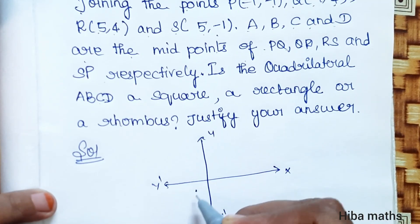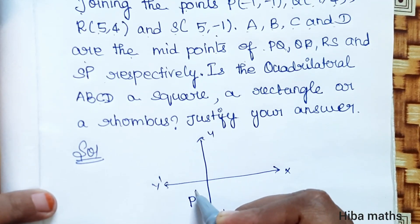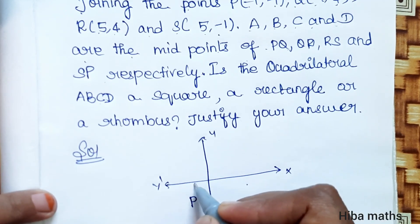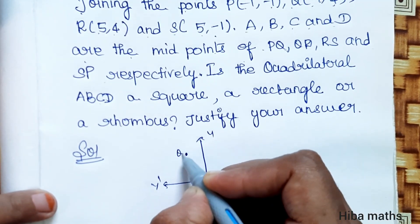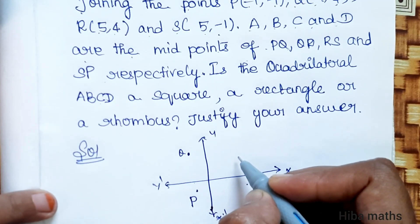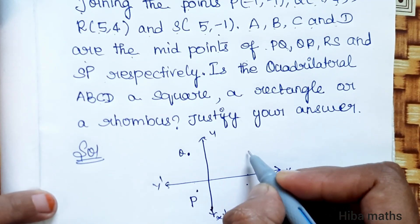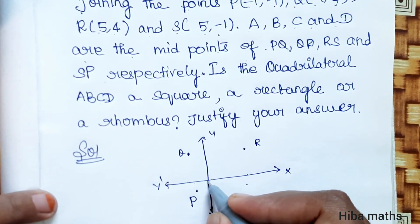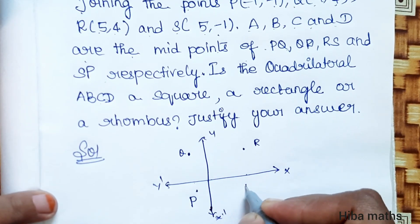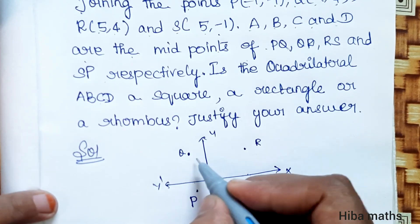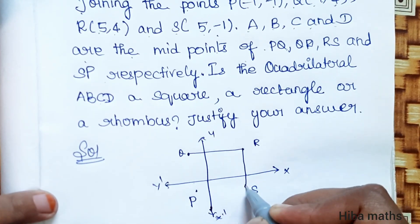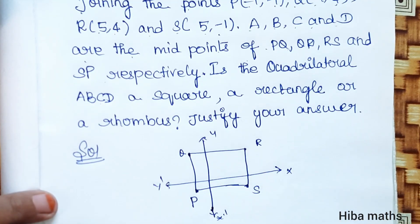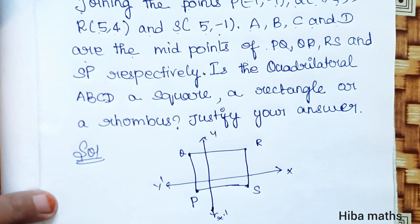P is at (0, -1), Q is at (-1, 4), x is minus 1, y is 4. R is at x = 5, y = 4. S is at (5, -1). So PQRS forms this rectangle. Now A, B, C, D are the midpoints of the sides.